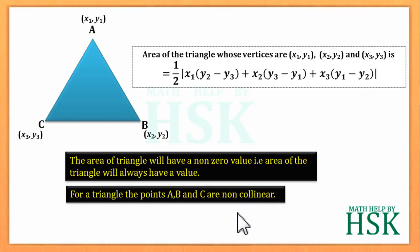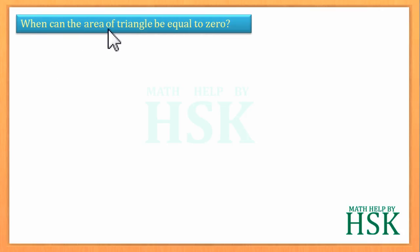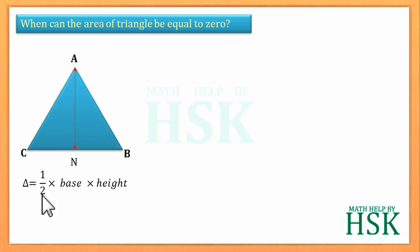Now I put forward the question: when can the area of triangle be equal to zero? To answer this, we take a triangle ABC and we mark that AN is the height of the triangle. Then it is known that area of triangle is equal to 1/2 × base × height.